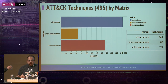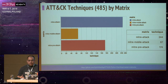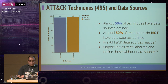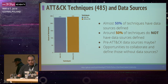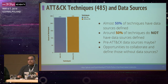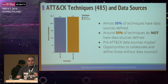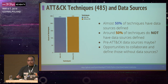The MITRE ATT&CK team distributes 485 techniques across three matrices: Enterprise, Mobile, and Pre-ATT&CK. From a data source perspective, almost 50% of the techniques have data sources. The question is: what's happening with the other half? Some techniques may not generate data inside your environment where your sensors collect data — such as the Pre-ATT&CK techniques. This is also an opportunity to collaborate with the ATT&CK team.